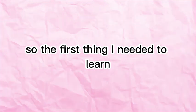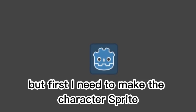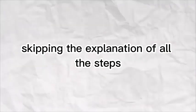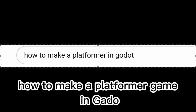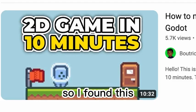So the first thing I needed to learn was how to add movement in physics. But first I need to make the character sprite. I'll just search for how to make a platformer game in Godot. I wanted a short and clear tutorial. So I found this.